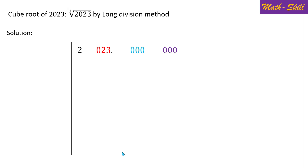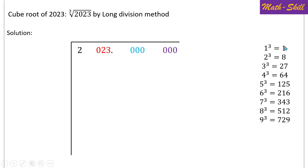The second step is to start the long division method from the left-hand side, beginning with the group on the left. Since the first group contains only one digit — the number 2 — we start here. We consider a number whose cube is less than or equal to the first group. 1³ = 1 and 2³ = 8, which is more than 2, so we cannot use 2. Therefore the first digit in the quotient is 1.